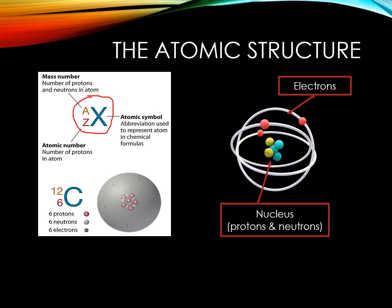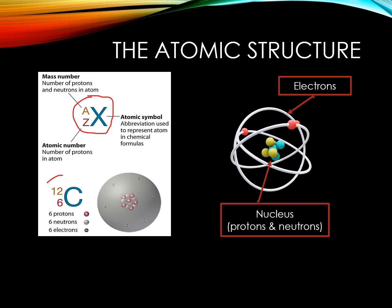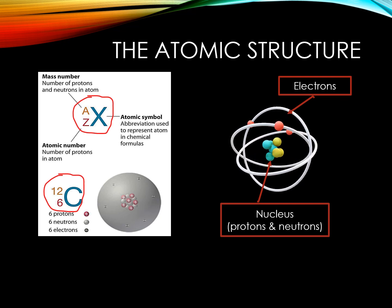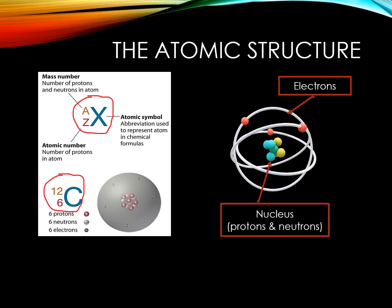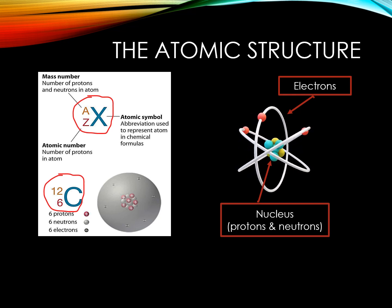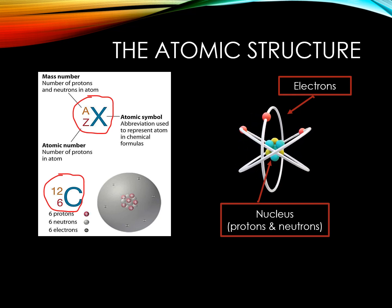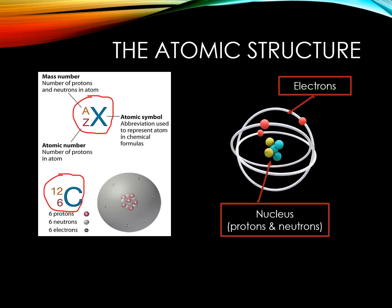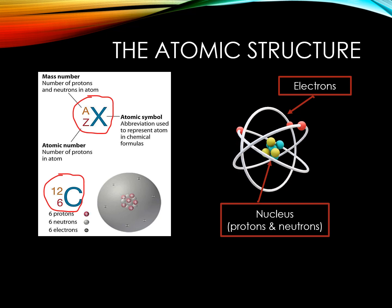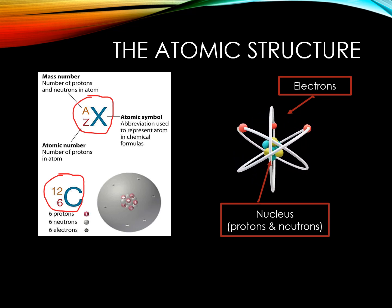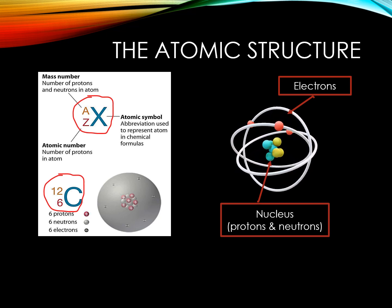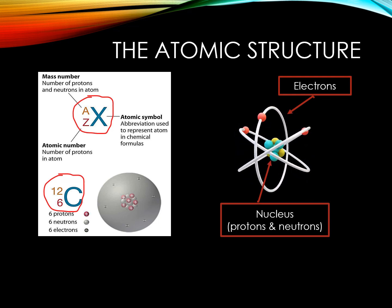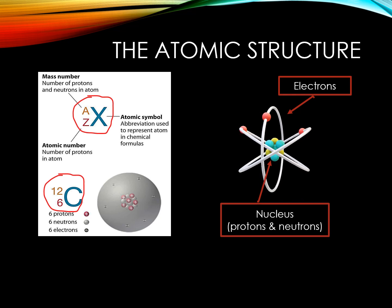For carbon, the number of protons or atomic number is 6, so the number of electrons is 6. The atomic mass is denoted by the superscript notation A, which is equal to 12 for carbon. The atomic mass is equal to the total number of protons and neutrons in the nucleus. Thus, the number of neutrons is calculated by subtracting the total number of protons from the atomic mass. In the case of carbon, the number of neutrons equals 12 minus 6, or 6.